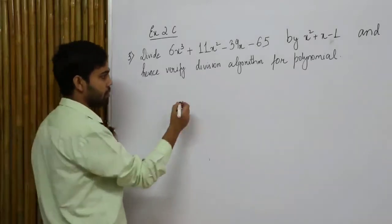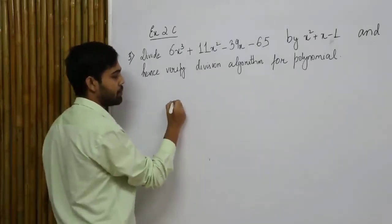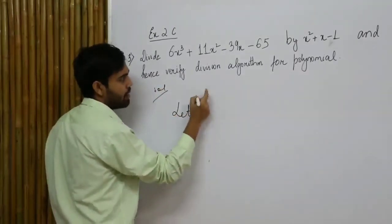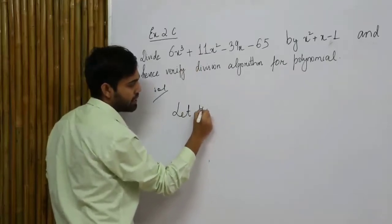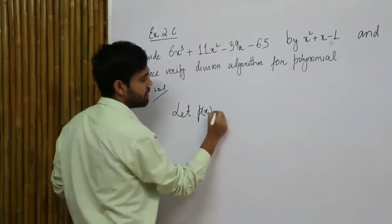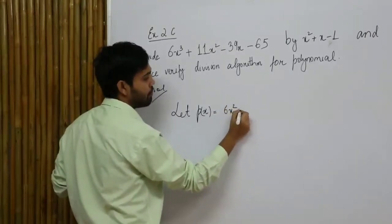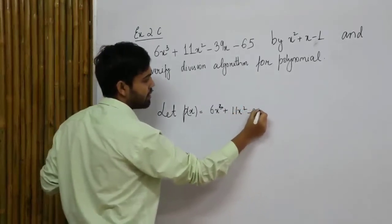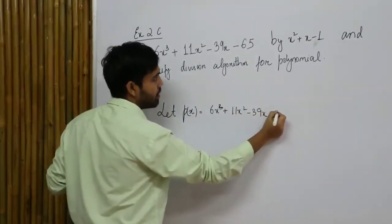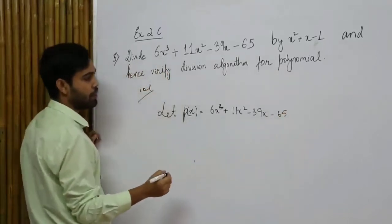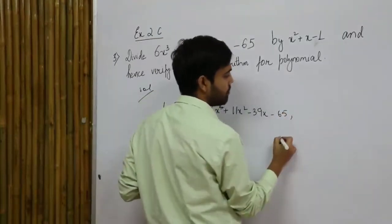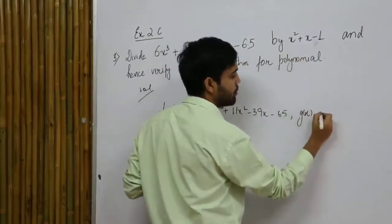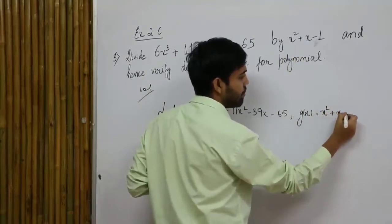Before doing this, we will name the polynomials. Let the first polynomial be p(x), which equals 6x cubed plus 11x squared minus 39x minus 65. The second polynomial is g(x), which equals x squared plus x minus 1.